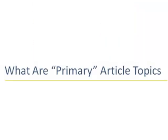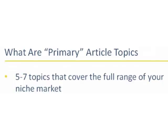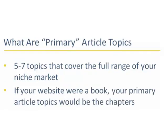Before you talk about the articles themselves, you need to talk about primary article topics. Topics are things that talk about your niche product. Consider your website as a book, and the chapters in that book are the article topics. You need about five to seven of them to adequately cover it — it may be more, it may be less, whatever it takes to give a good look at your site. Your primary article topics are the chapter topics.